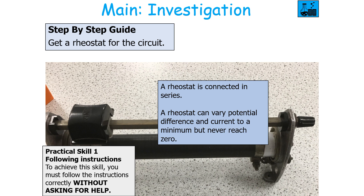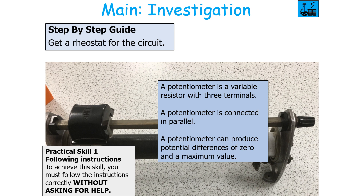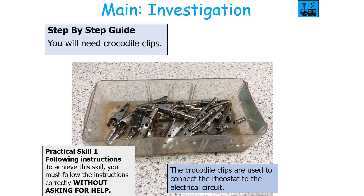If you were going to use a potentiometer instead, a potentiometer is a variable resistor with three terminals and is connected in parallel to the wire in this investigation. A potentiometer can produce potential differences of zero and up to a maximum value. You would also need electrical wires, which have an internal resistance, and crocodile clips, which are used to connect the rheostat to the electrical circuit.